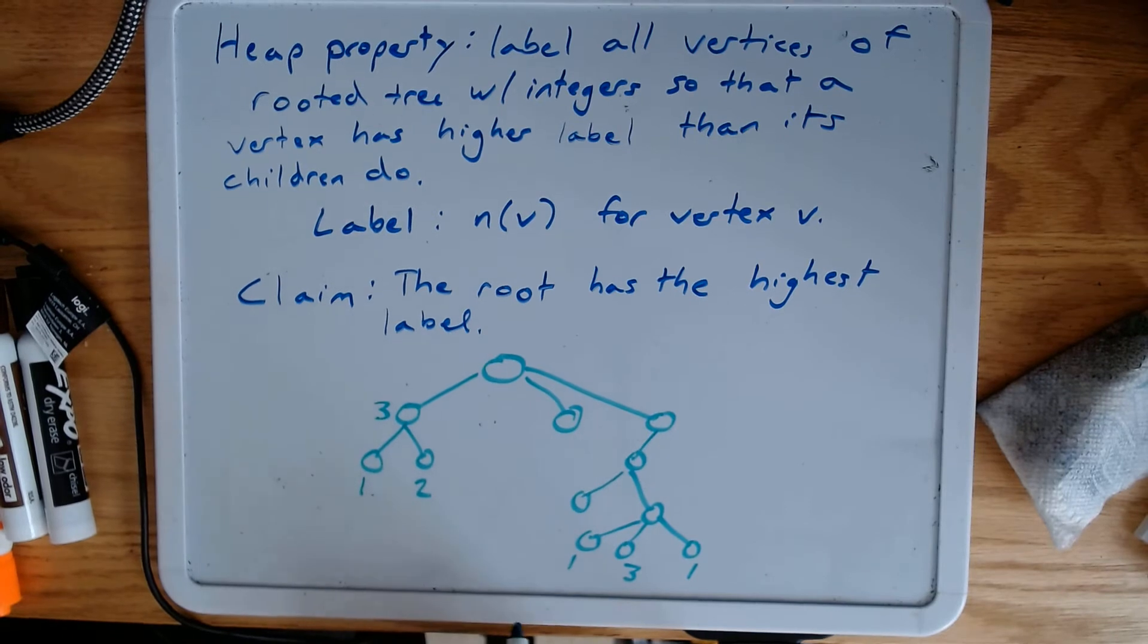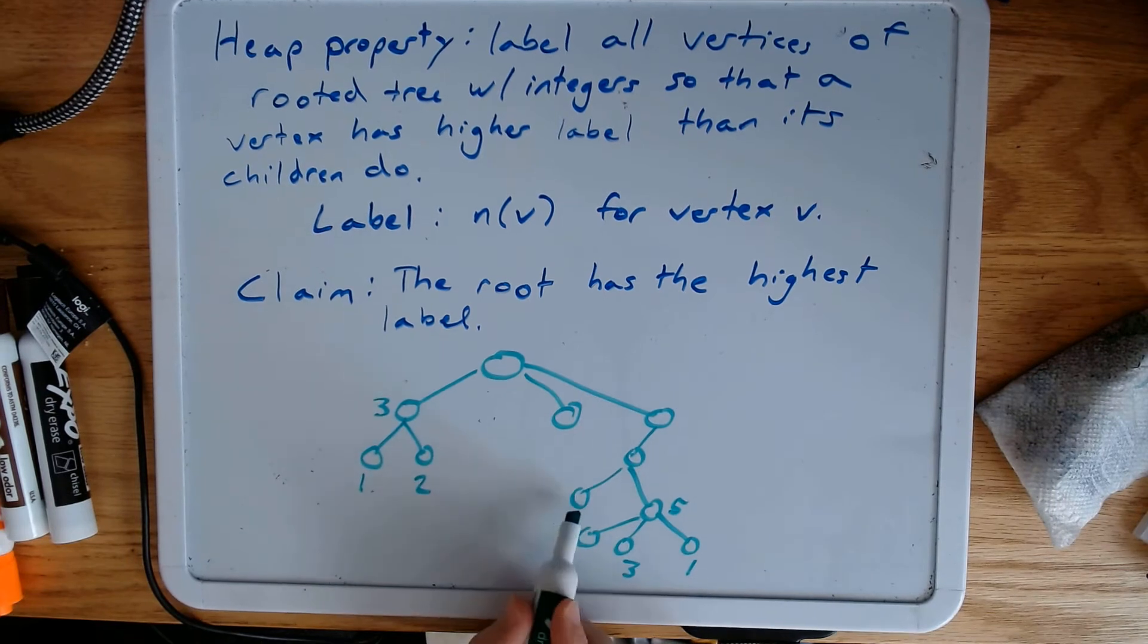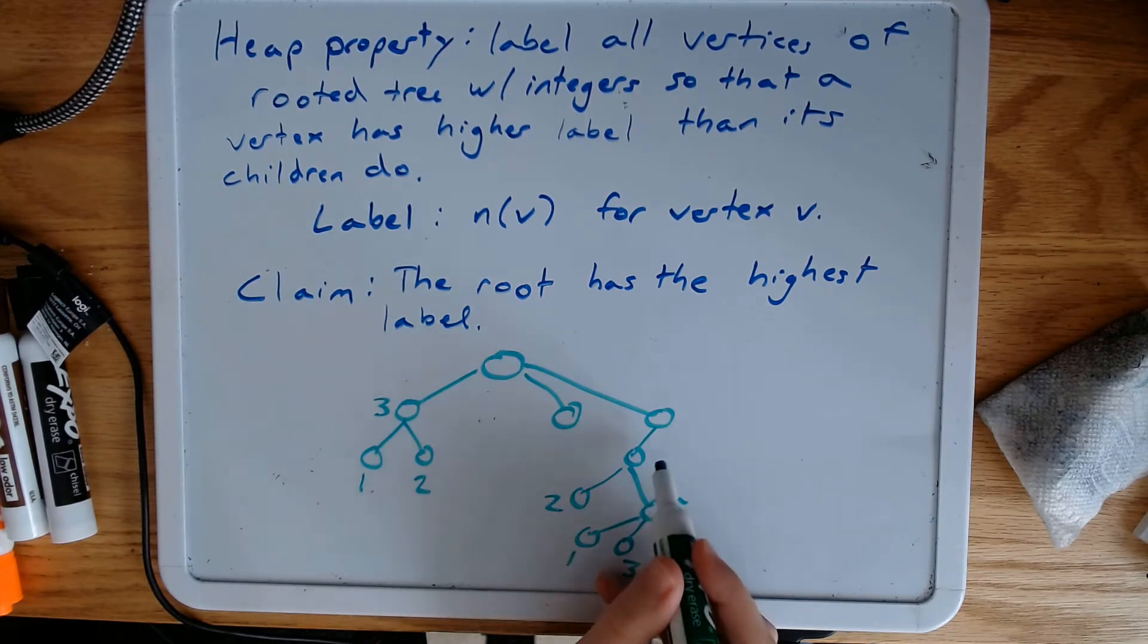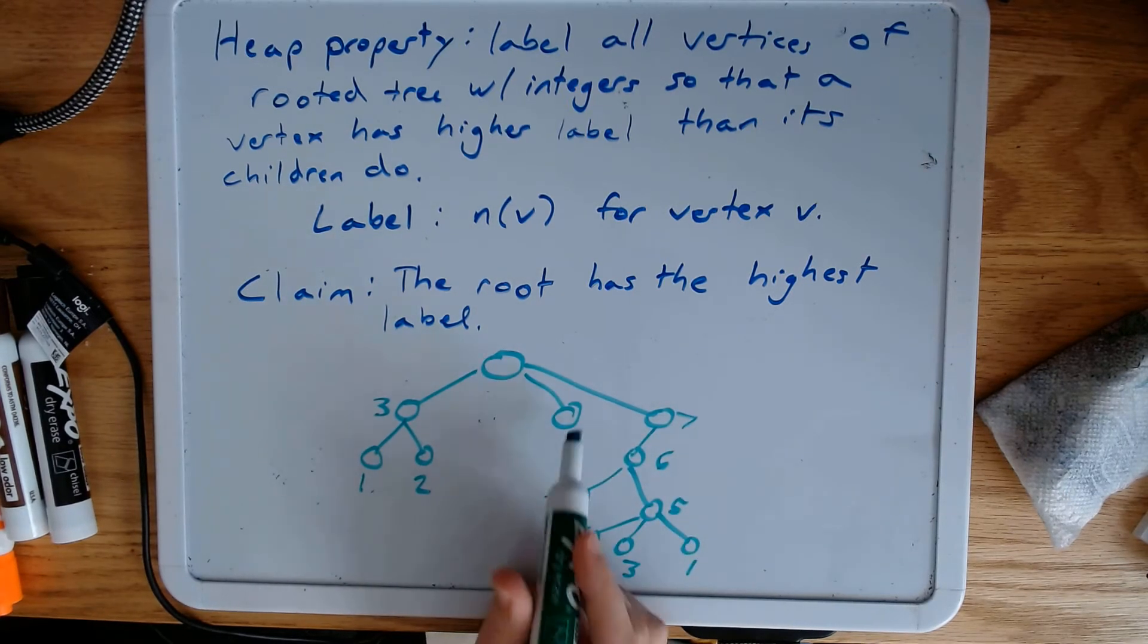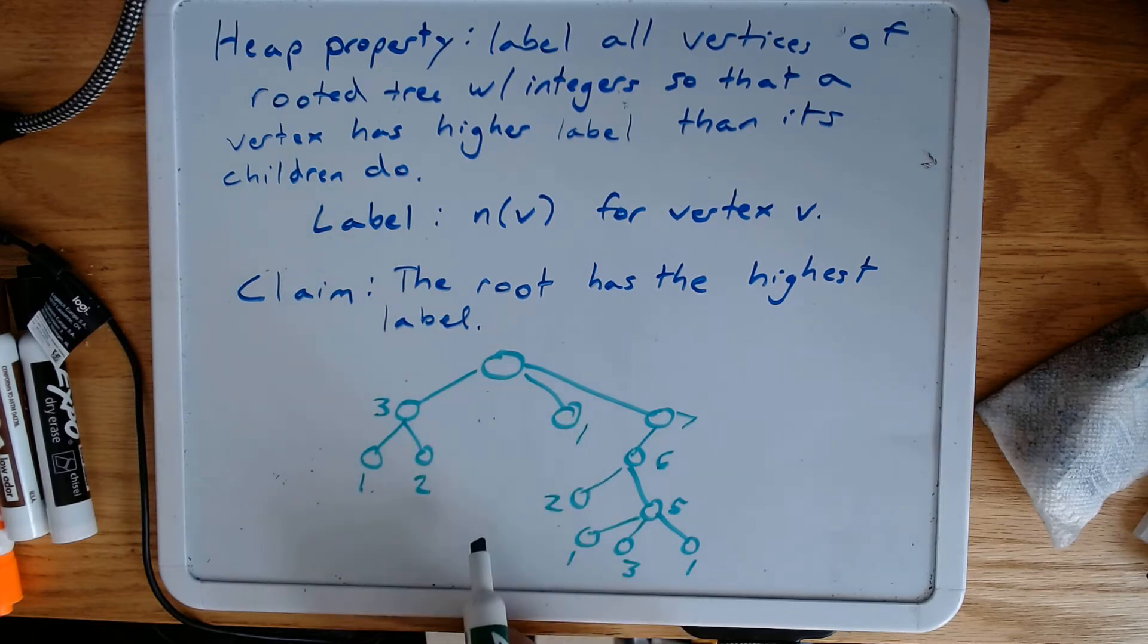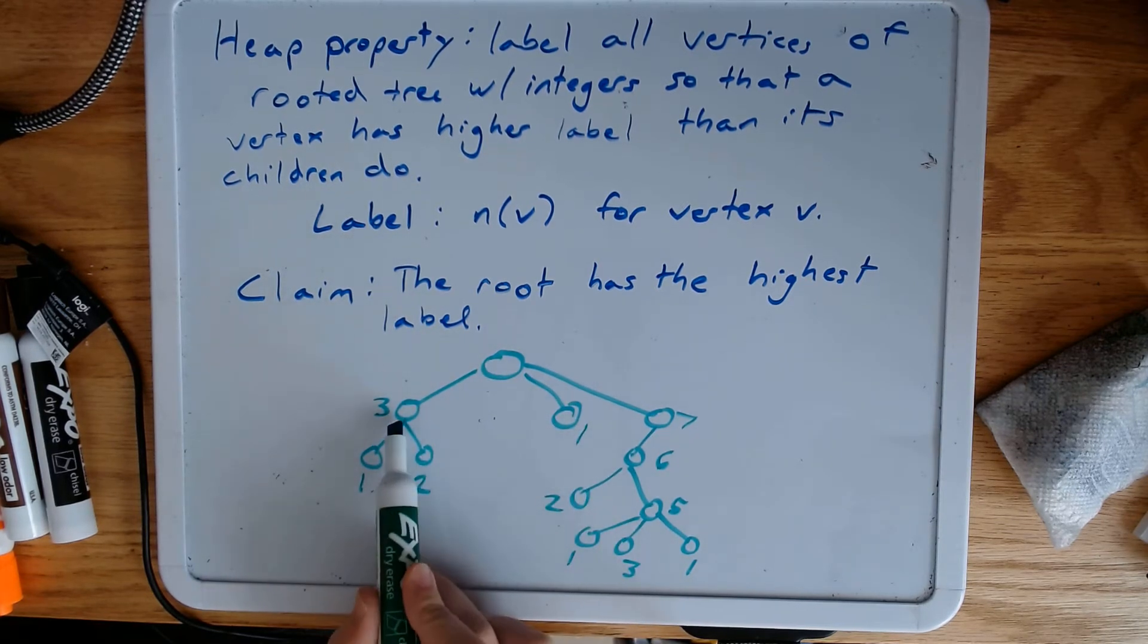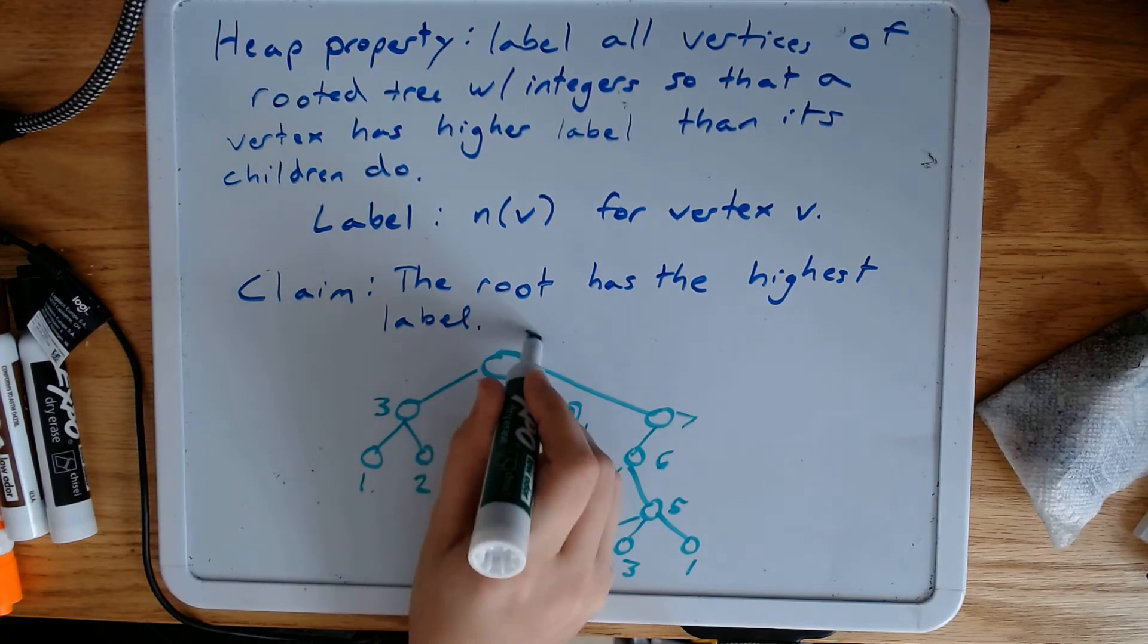This one needs a label that's higher than 3 and 1, so I'm going to label it 5. This one I can label anything I want, I'm going to label it 2. This vertex has to have a label that's higher than 2 and 5, so it could be 6. This one could be 7. This one could be anything, I'm going to label it 1. So this one needs to be higher than 3 and 1 and 7, so maybe it's 8.